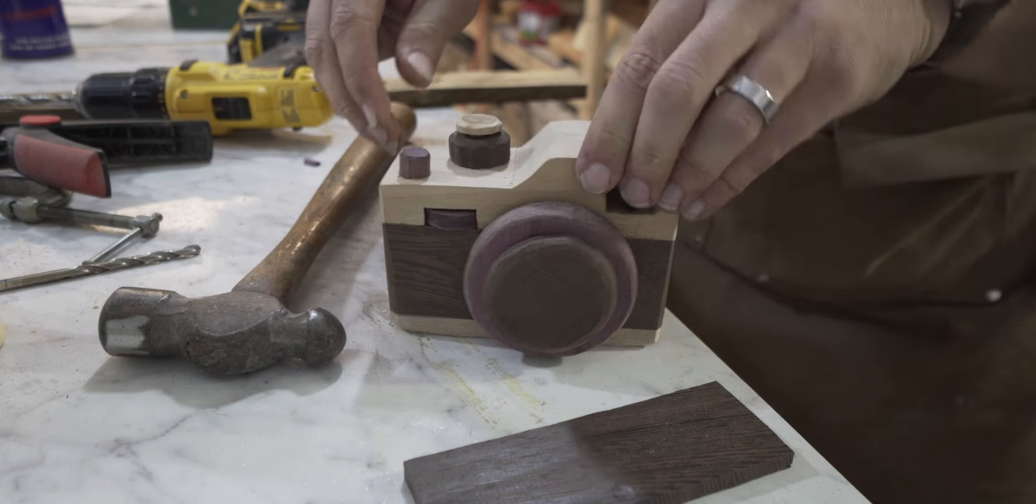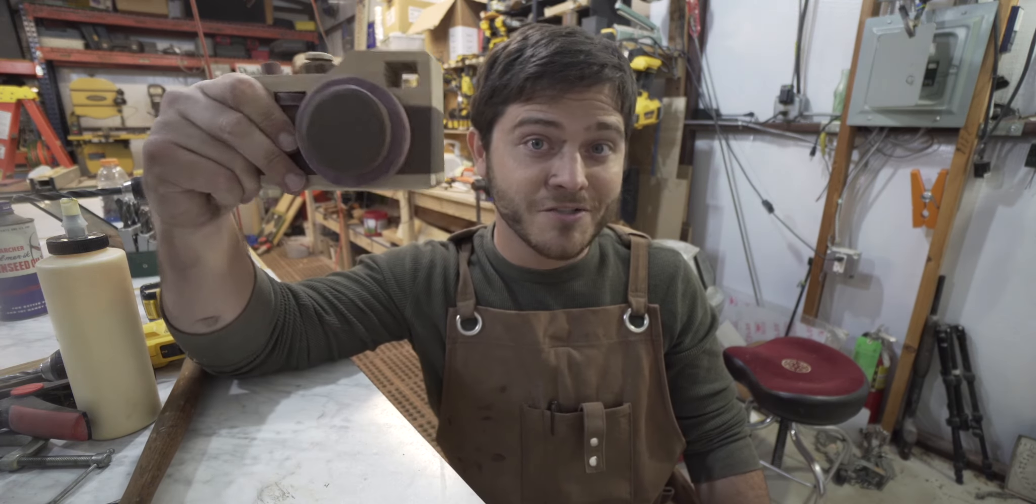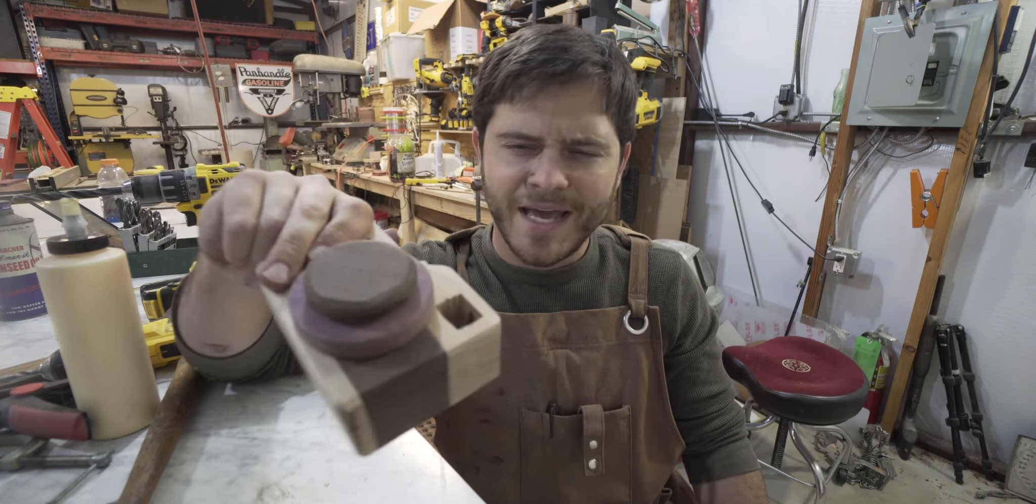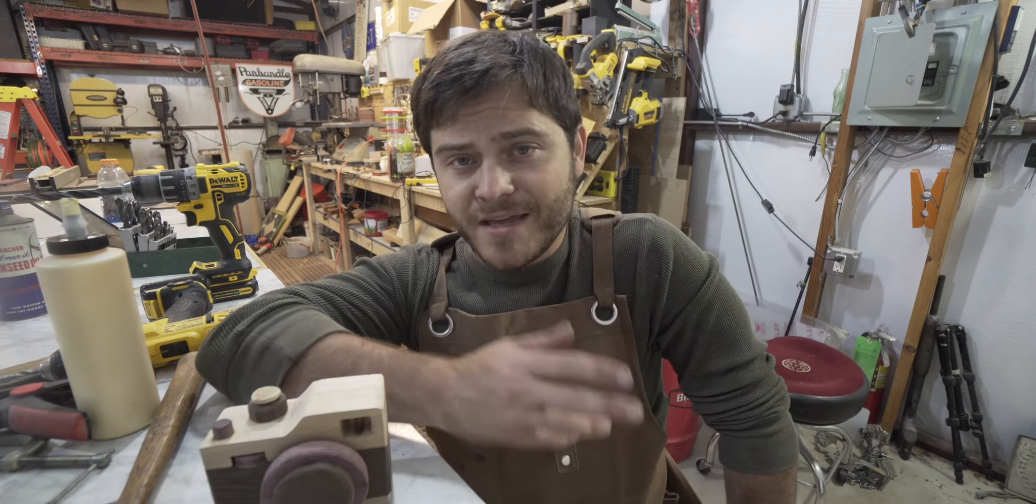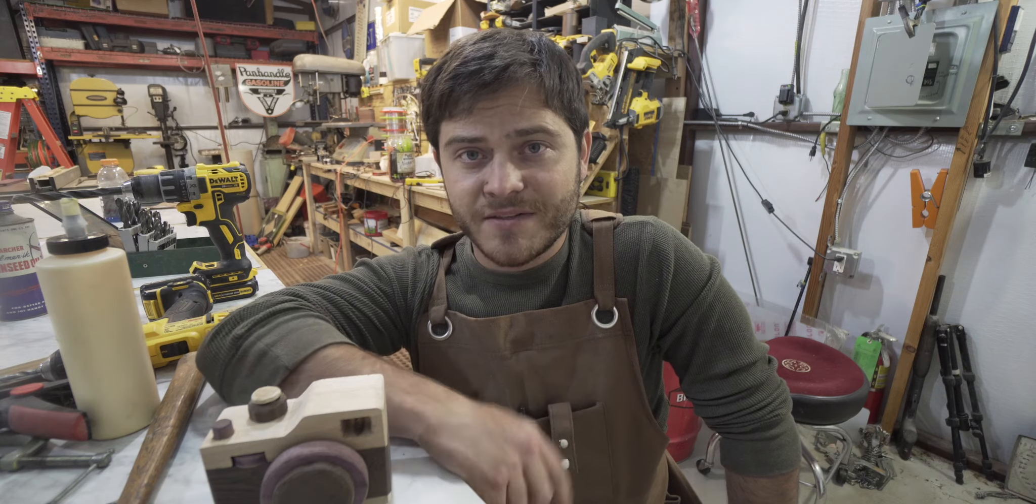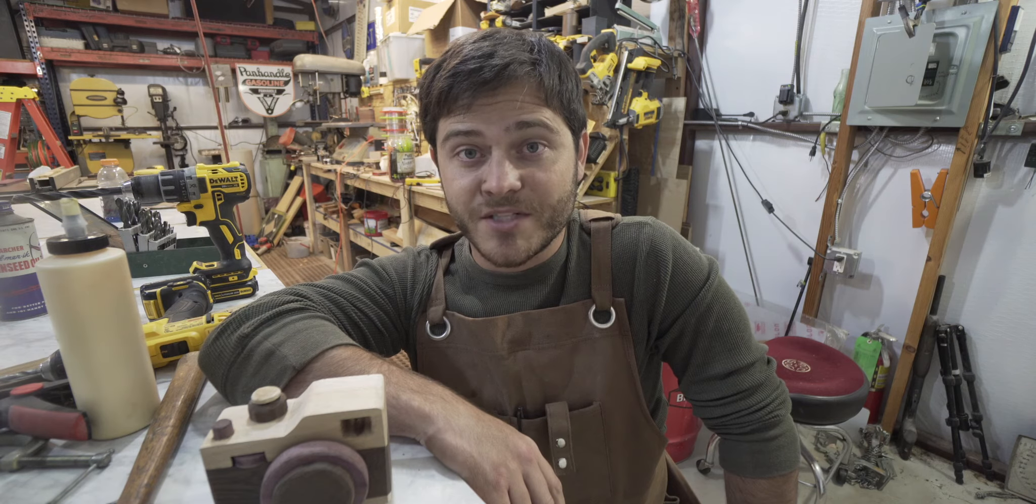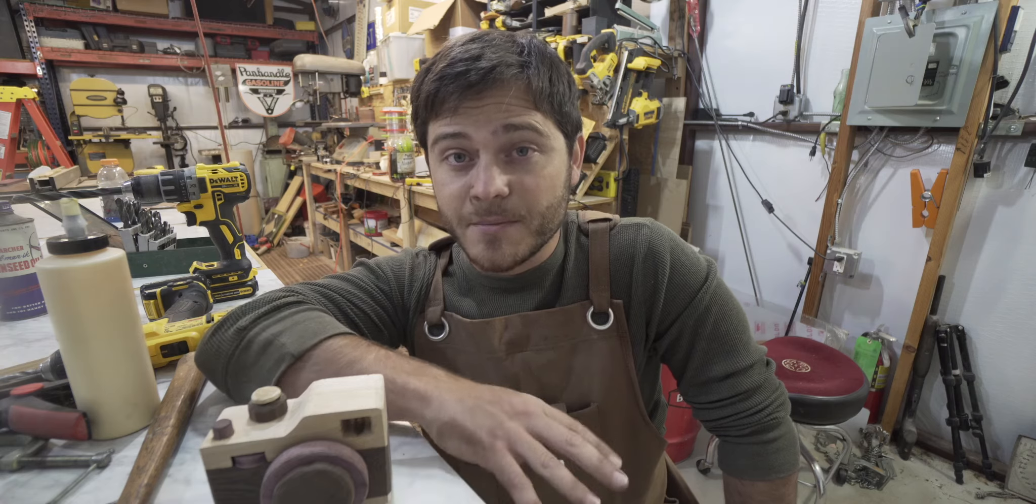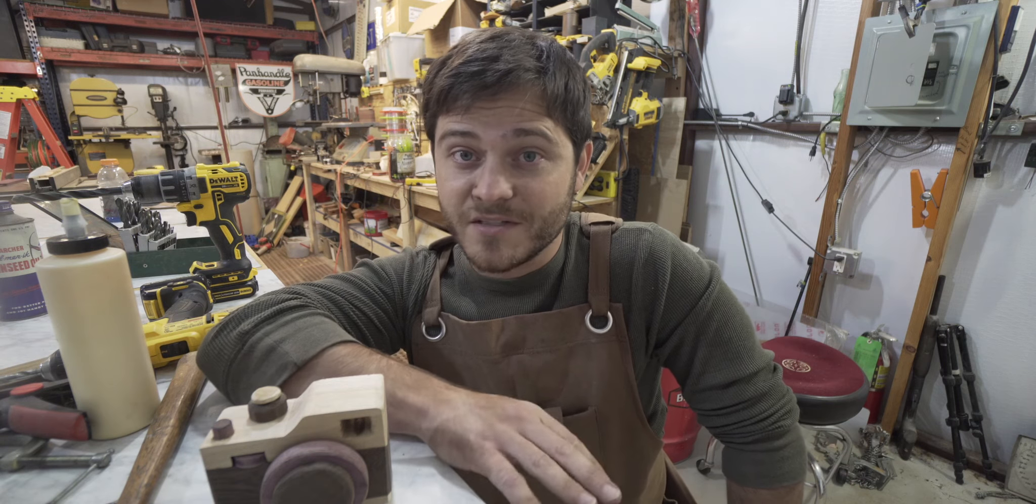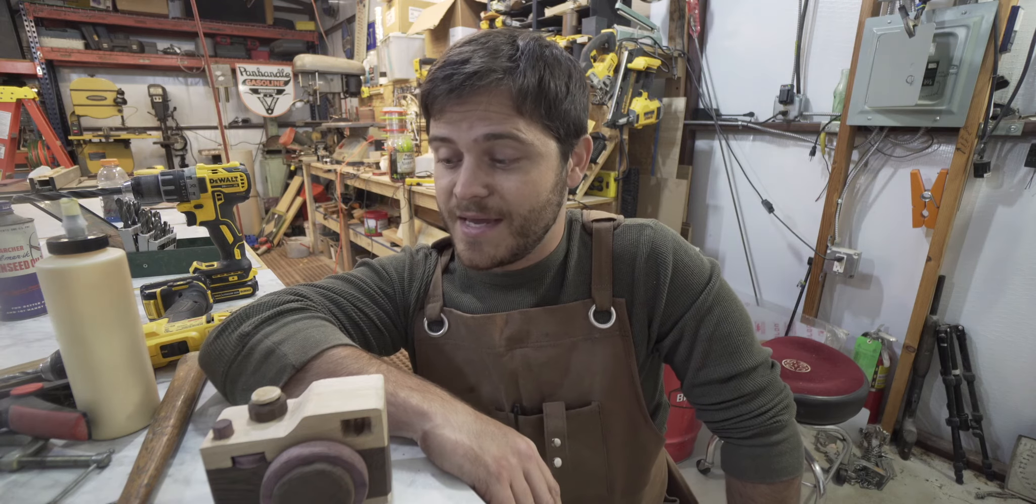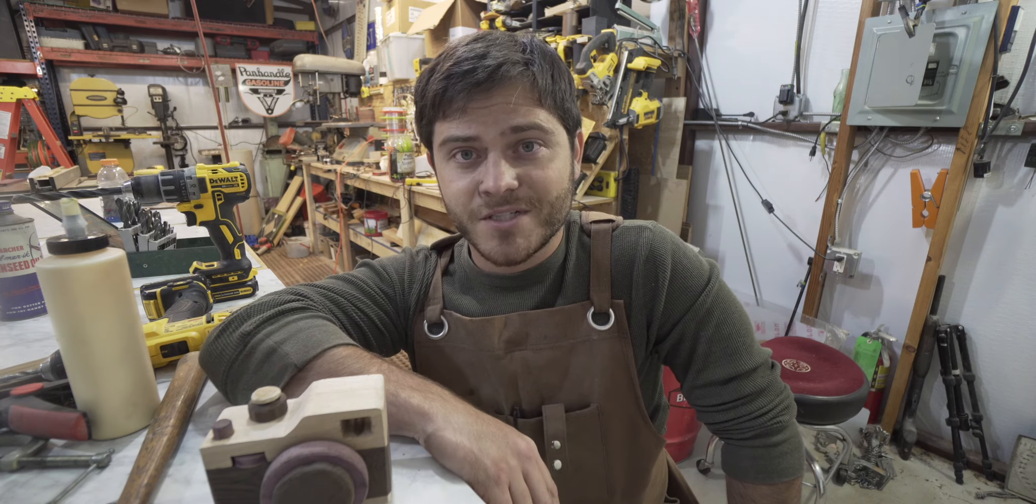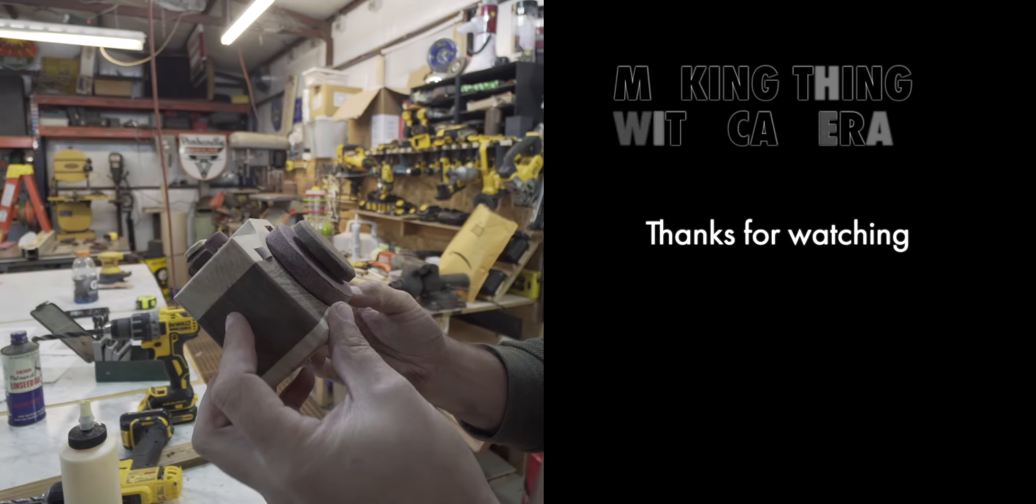So that's it everybody, a Fujifilm x100 inspired toy wooden camera. Had a lot of fun making it. I've never done anything like this before and I think it turned out pretty well. If you liked this video, please consider giving it a thumbs up and subscribing to the channel. I also recently made a topographical map of Hyrule from The Legend of Zelda: Breath of the Wild. Check that out, I'll put that up at the end of the video. Thanks so much for watching, see you later.